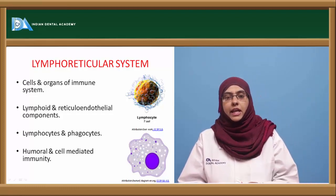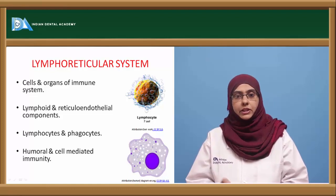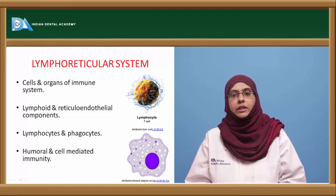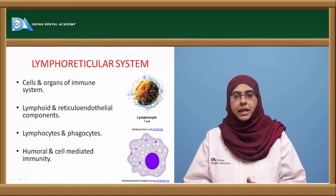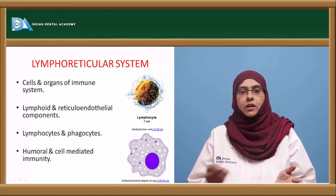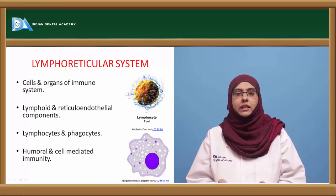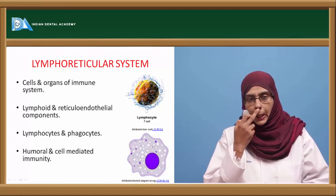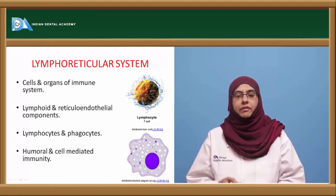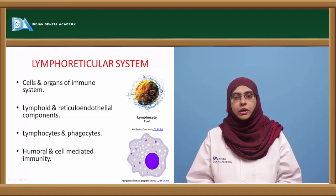Phagocytes are the ones that mount an innate or non-specific immune response, and the main function of the phagocyte is to eliminate organisms by phagocytosis. Apart from being a component of the innate immune system, it also helps to activate the specific immune system by acting as an antigen-presenting cell. The immune response can be classified into two major components: humoral immune response and cell-mediated immune response.